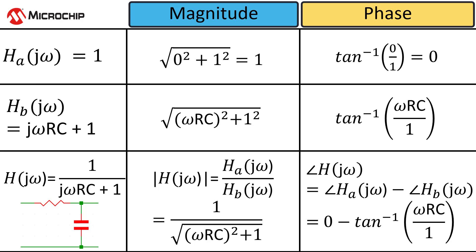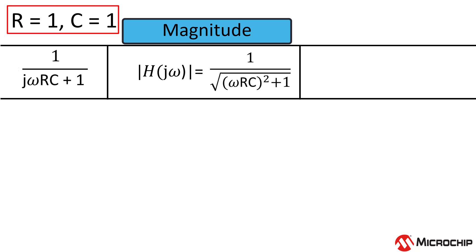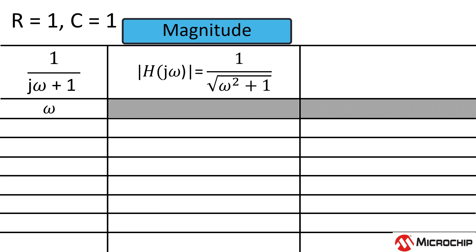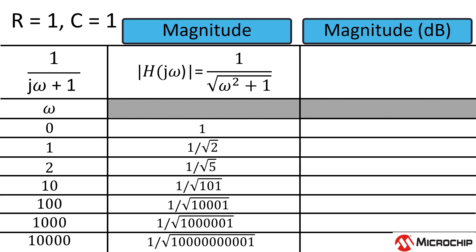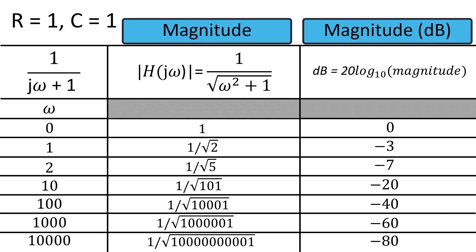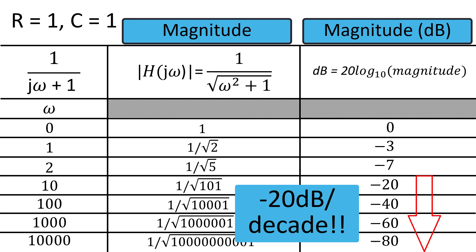Let's unpack this a little by plugging some numbers into our magnitude. Let's assume our resistance is 1 ohm and our capacitance is 1 farad, so RC equals 1. When the frequency is 0, the magnitude is 1. When the frequency is really big, like 10,000, we get a really small magnitude. This checks out because this is a low-pass RC filter — as the frequency gets bigger, the magnitude of the output voltage gets smaller. Let's fill in a few more: 1 gives this, 2 gives this, 10 gives this, and so on. Now converting to decibels using 20 times log base 10 of the magnitude: 1 is 0 dB, 1 over the square root of 2 is minus 3 dB, and so on. And boom — we've got our minus 20 dB per decade. From 10 to 100 there's a change of about minus 20 dB, same as from 100 to 1000.